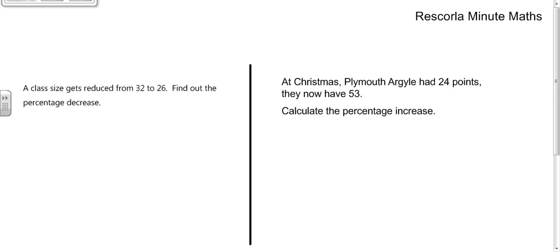The class size has been reduced from 32 to 26, so the actual decrease has been 6. And the original is 32. So we do 6 divided by 32, and then times by 100, and we get 18.75%.